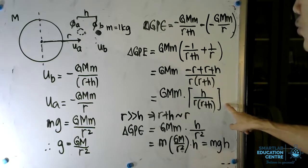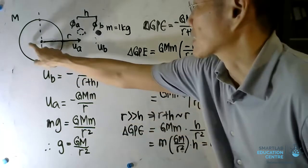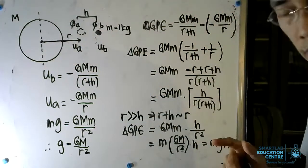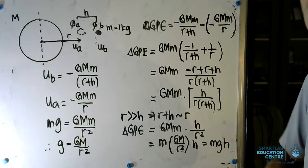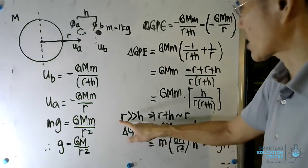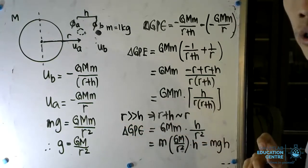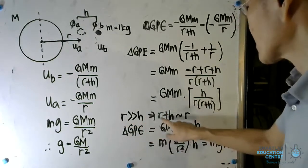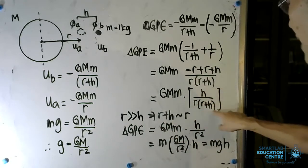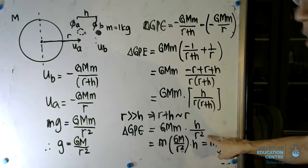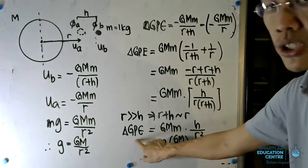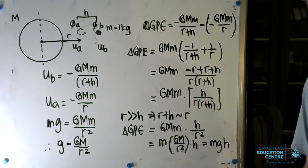You can conclude that if you expect R to be much larger than h, since the radius of Earth is about 6,000 kilometers, it is a fair assumption to say that R is by and large much larger than h. If that is the case, then R plus h can be approximated as R, and we can pair this down to h over R squared. By recognizing GM over R squared as g, we know that the change in gravitational potential energy is equal to mgh.